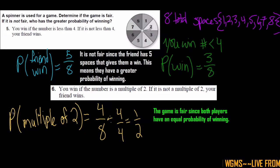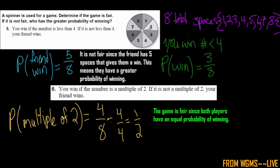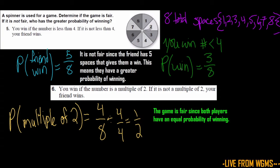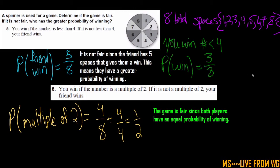You write probability as capital P and then write the event inside the parentheses. Any questions with that one?